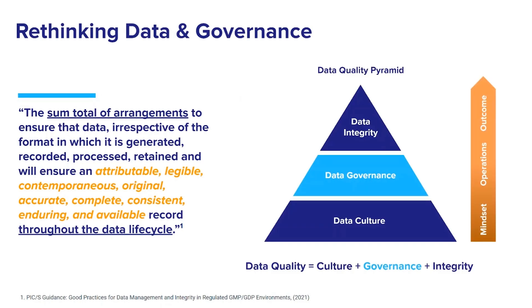The data quality pyramid includes both governance and integrity, but also considers the element of data culture, which is the foundation of high data quality, since it reflects the organizational mindset towards its data. This mindset is then operationalized with a sum total of arrangements, which represents the data governance layer. The combination of the right mindset and the right operational posture then produce the desired outcome of high data integrity. The balance of this discussion will focus on the strategies required for successful data governance to improve operational data integrity.